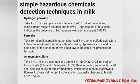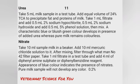Detection of ammonium sulfate — take 2 ml milk in a test tube and add 0.5 ml sodium hydroxide (2%), 0.5 ml sodium hypochlorite (2%), and 0.5 ml phenol (5%). Heat in a boiling water bath for 20 seconds. A bluish color forms immediately which turns deep blue afterward. Pure milk shows salmon pink color which gradually changes to bluish after two hours.